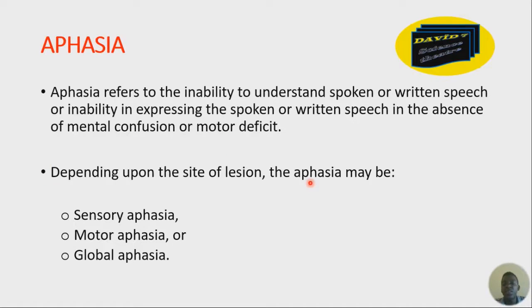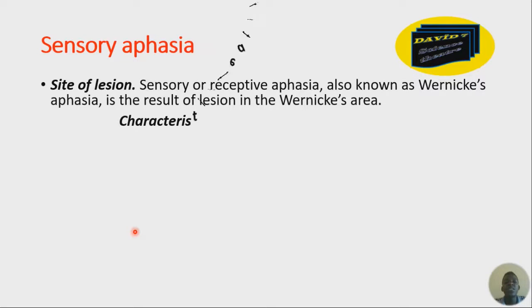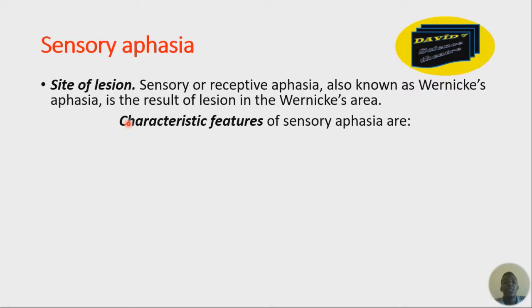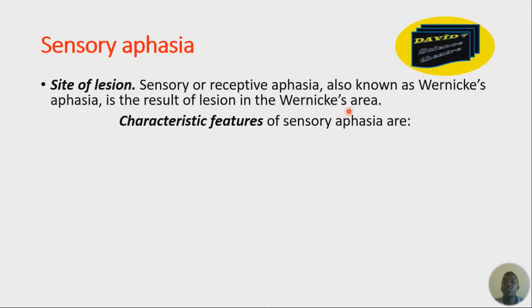Depending upon the site of lesion, aphasia is grouped into three: we have sensory, we have motor, and we have global aphasia. With sensory aphasia — when does it occur? The site of lesion in sensory aphasia is called Wernicke's aphasia, because the lesion occurs in the Wernicke's area of the cortex. The auditory or speech centers — we have Wernicke's area, and this is area 22. When it is affected by a lesion, it causes sensory aphasia.